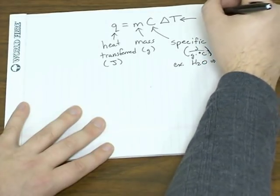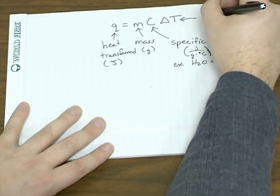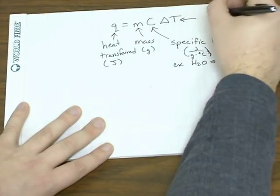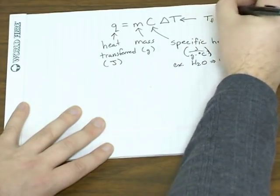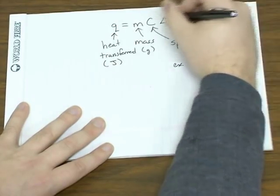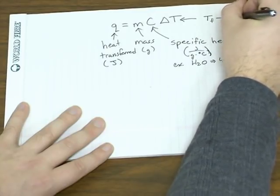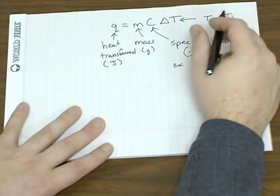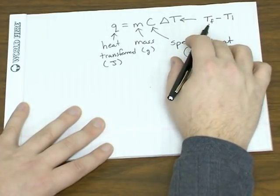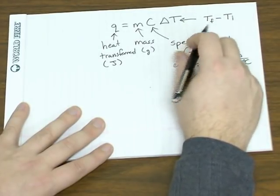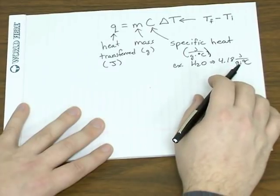And delta T is the temperature change. A little delta here means change. Whenever you see the Greek letter delta in a math equation, it's always defined as the final minus the initial. So we're looking at the final temperature minus the initial temperature.